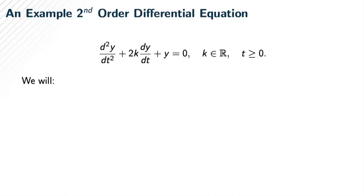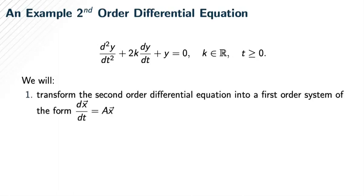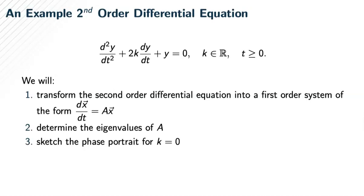Let's take a specific example: this second-order ordinary differential equation with constant coefficients where k is some real constant. We will do a couple things: first, transform that second-order differential equation into a system of first-order equations; determine the eigenvalues of A; and sketch the phase portrait for a specific value of k. We could use other values as well, but let's just look at k equals zero for this video.